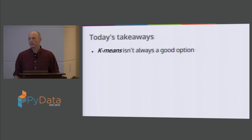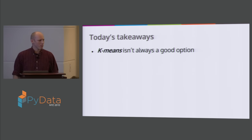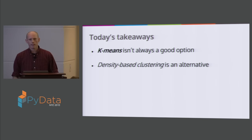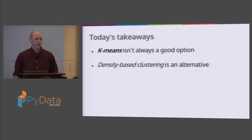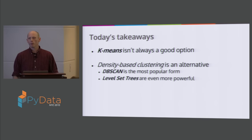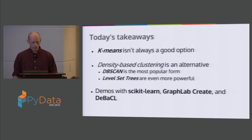There are a few key takeaways. First, k-means is not always a good option — that was the big point of a lightning talk yesterday, and I agree completely. The point of this talk is that density-based clustering is a family of methods that's sometimes a good alternative. DBSCAN is the most popular form, so I'll spend a lot of time explaining how it works. Level set trees is something I've worked on for a long time — it's a more powerful method than DBSCAN, I believe. Finally, I'll go through some code with scikit-learn, GraphLab Create, and my own package, debacle.